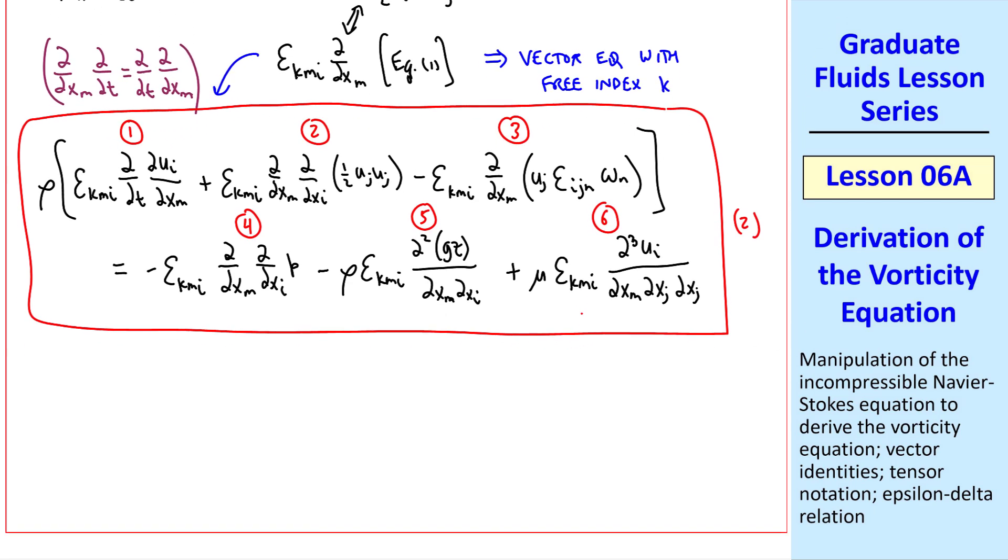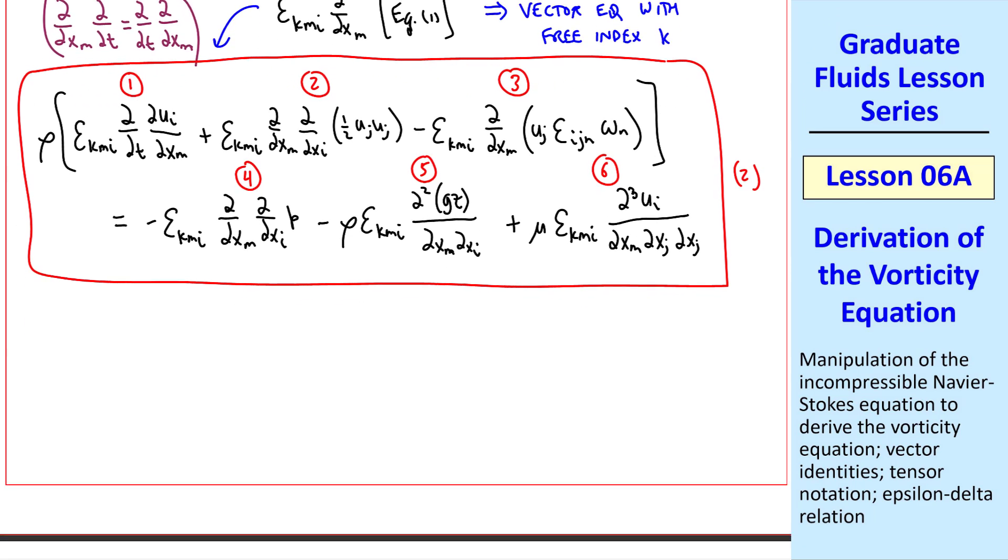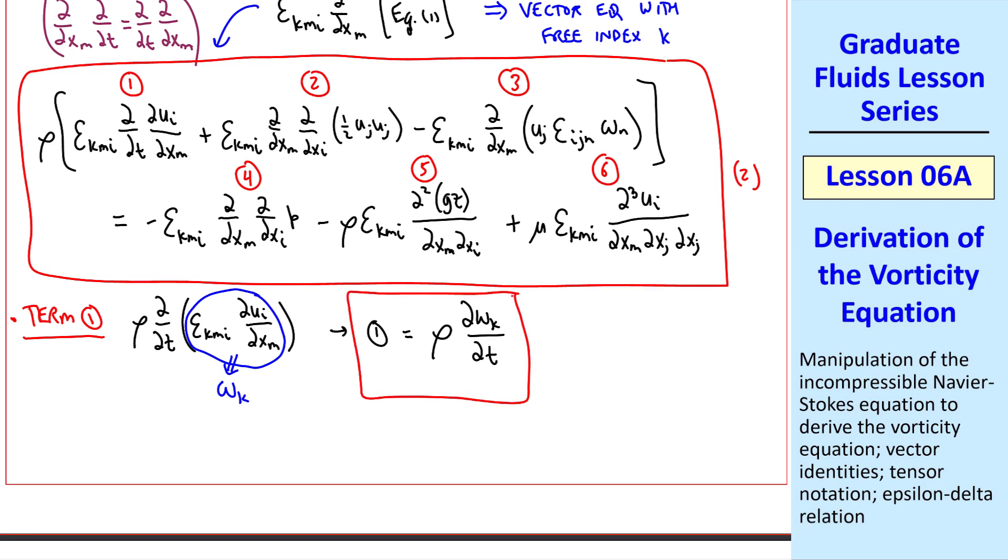Let's examine each term separately to simplify this equation. Term 1. We'll rewrite as rho del-del-t epsilon kmi del-ui del-xm. Where we've moved the epsilon term into the time derivative here. Because epsilon is not a function of time. So we can put it here or here. The reason we did it this way was we recognized that this is the vorticity vector omega k. So term 1 is rho del omega k del-t. Now let's try to simplify all the other terms.